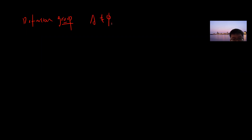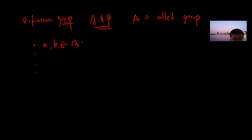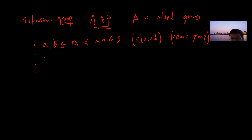The definition of a group: you have a non-empty set A, and A is called a group if it satisfies four properties. The first is that if a, b belong to A, then their product belongs to A — this is closure. By the way, if you only have this property, it's called a semi-group.